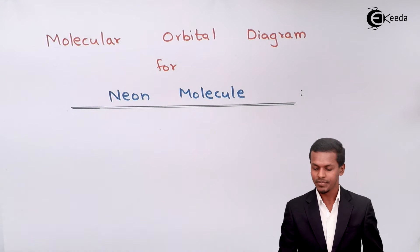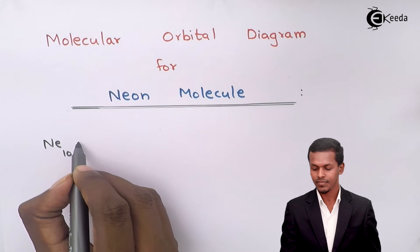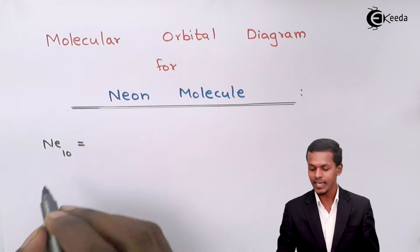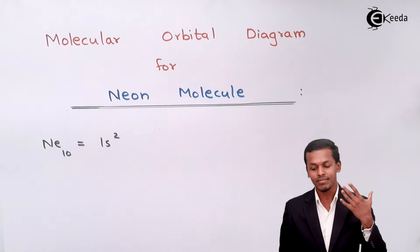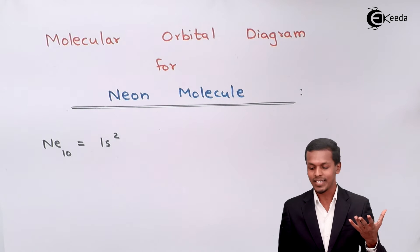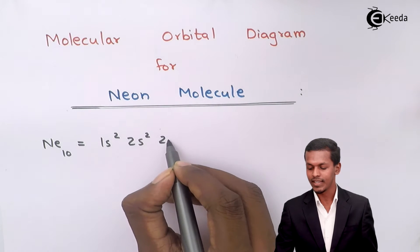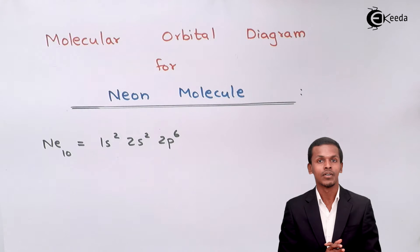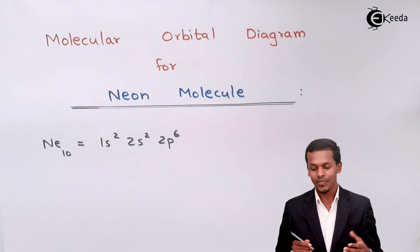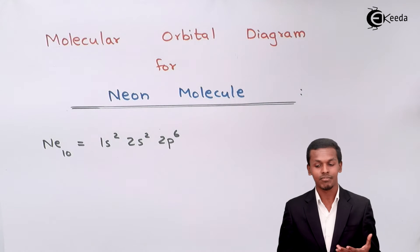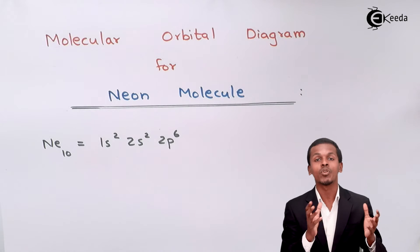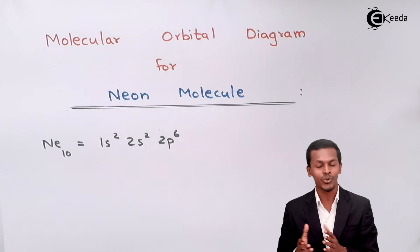Neon has an atomic number of 10. So how can we write the electronic configuration? It is very easy: 1s2, because the 1s sub-shell consists of two electrons, then 2s2, and ultimately 2p6, making it 10 electrons in total. So similarly we have to include two neon atoms and represent the two atomic orbitals.